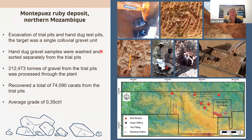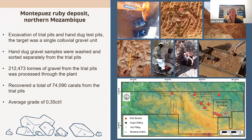Regarding the Montepuez ruby deposit, we excavated a number of trial pits — large pits with an excavator — as well as hand-dug pits that we would dig to about a meter depth to track the gravel we were after. You can see a large lens of colluvial gravels that we were targeting. Roughly across eight trial pits, we washed about 200,000 tonnes of gravel and were able to recover 74,000 carats, giving an average grade of 0.35 carats per tonne.